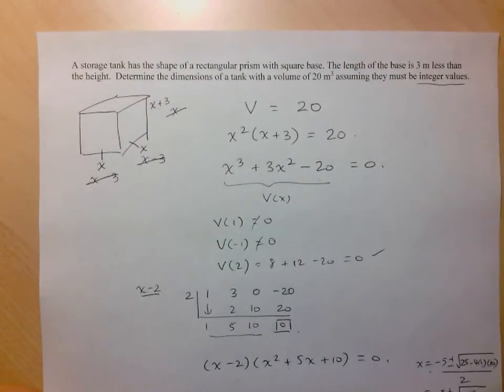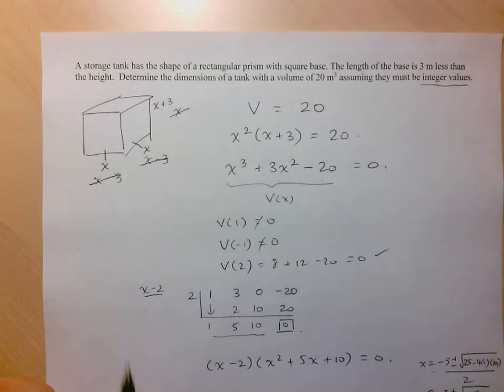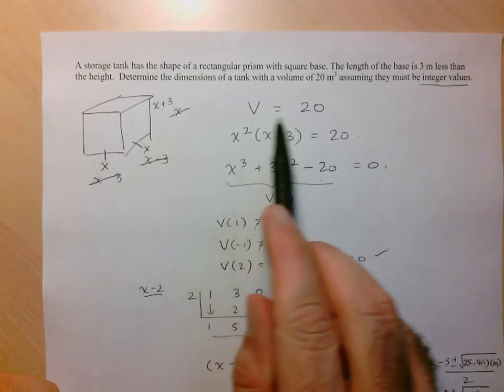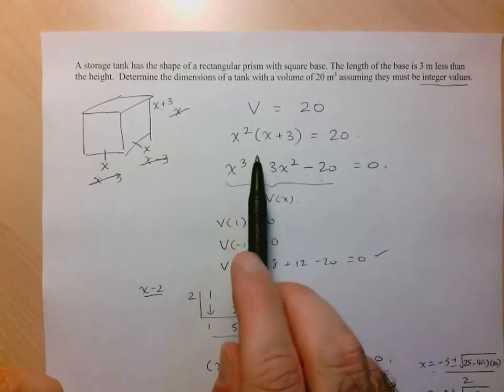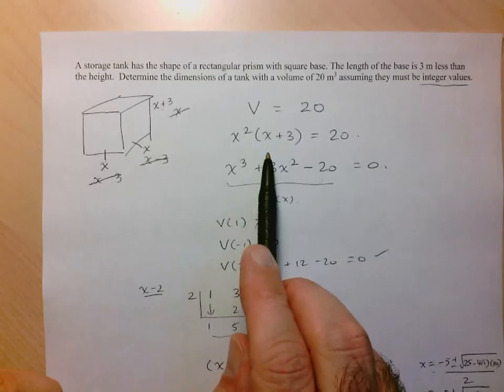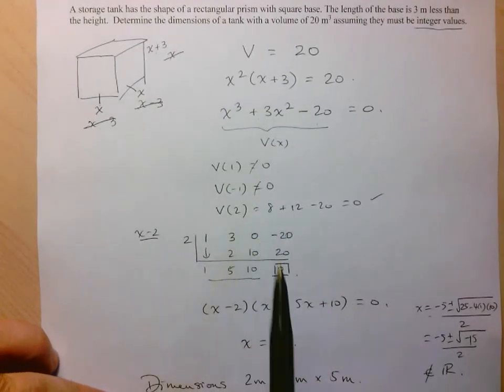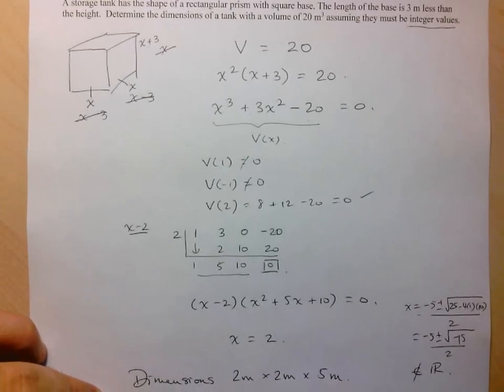So here, main thing is to start with a diagram if you can relate it to something physical. Take the condition that you're given and use that to write an equation. And once you realize that it's a polynomial equation, follow the steps for solving a polynomial equation. That's it for this one. Thank you.